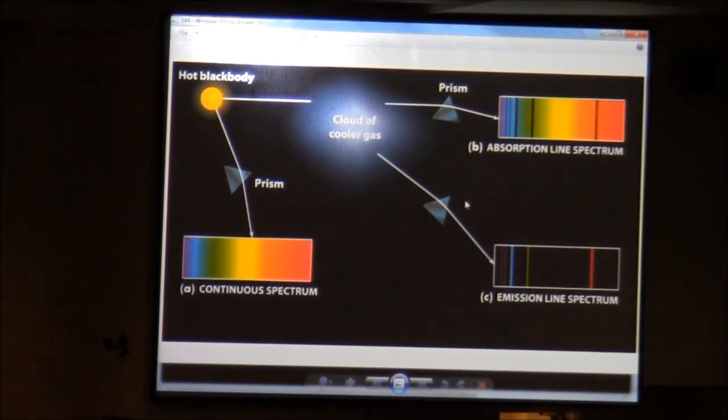But those atoms that absorbed that energy are then hot gas. They've been heated, if you will. Maybe the whole cloud isn't much hotter, but those particular atoms absorb the energy. They're more energetic. And they will then transition back down to lower energy states, giving you an emission line spectra.